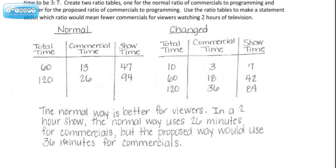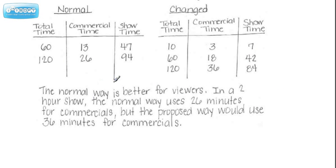So let's talk about what that might look like. The normal way is better for viewers in a two-hour show. The normal way uses 26 minutes for commercials, but the proposed way would use 36 minutes for commercials.